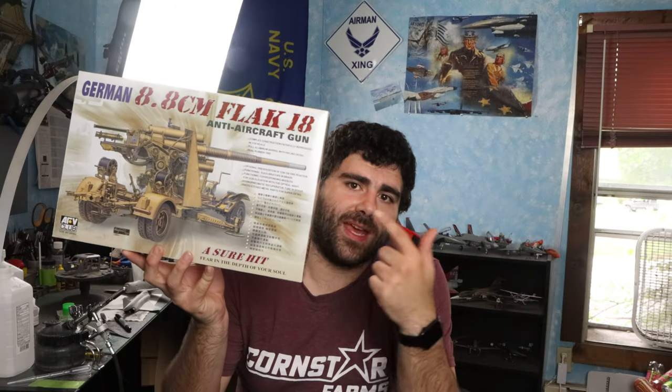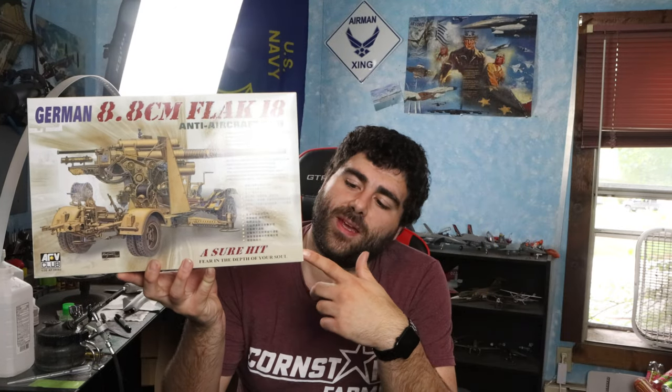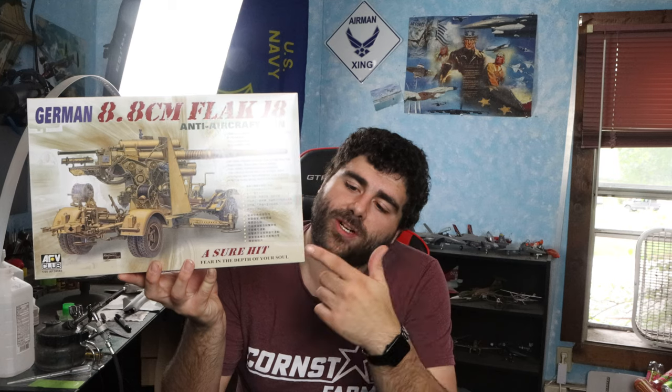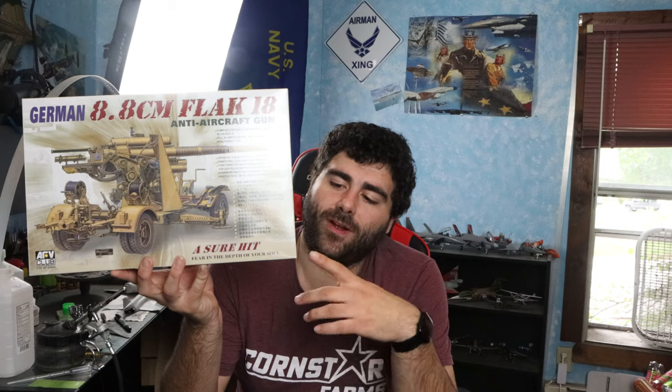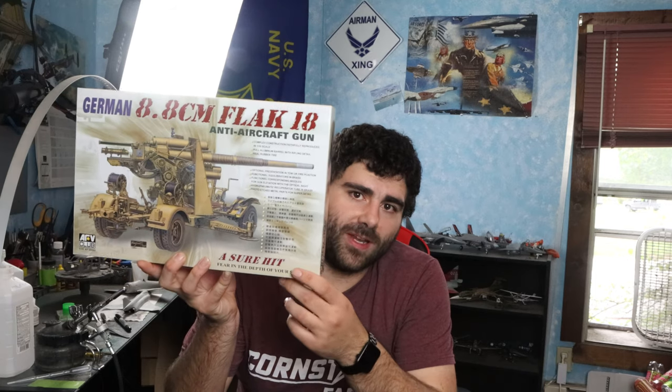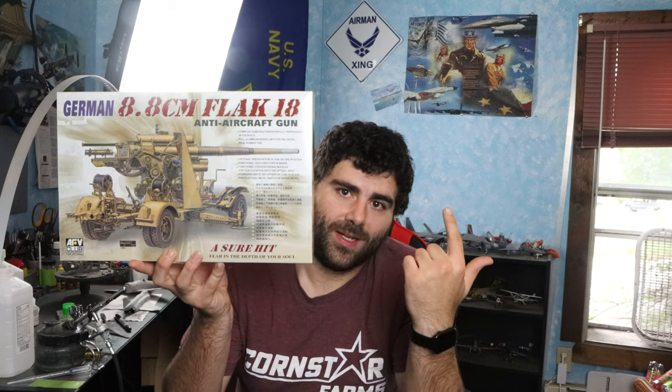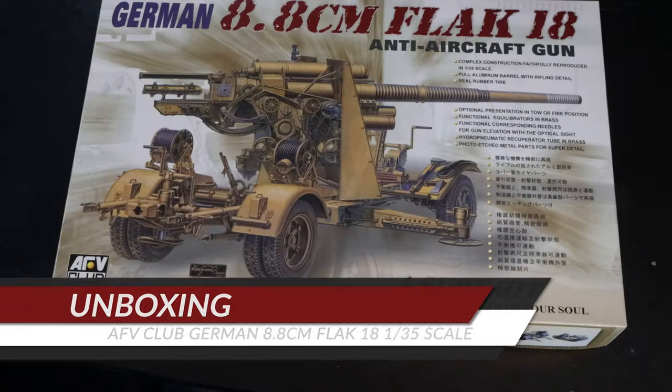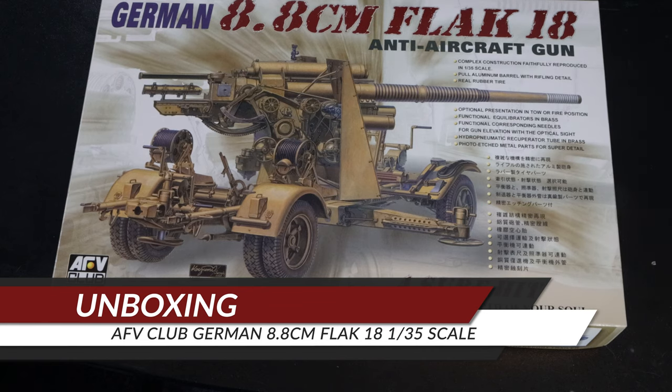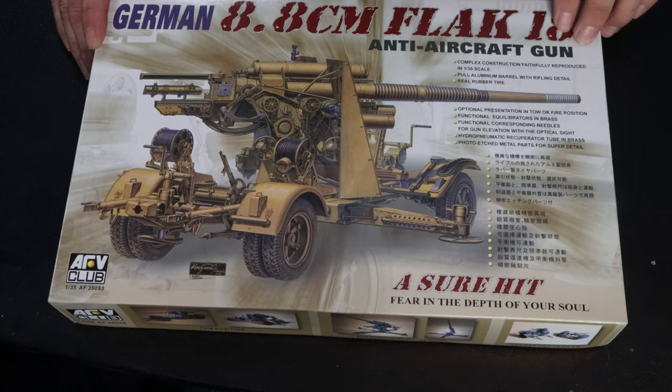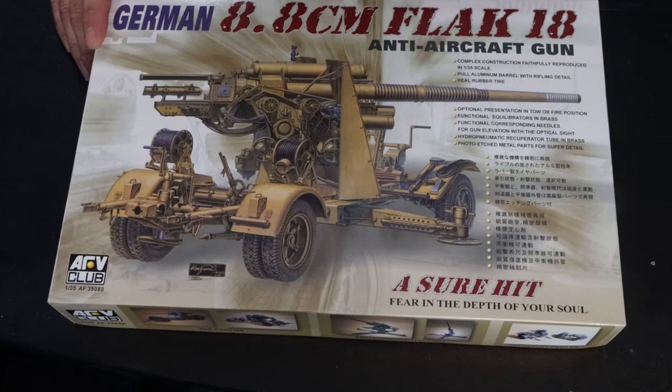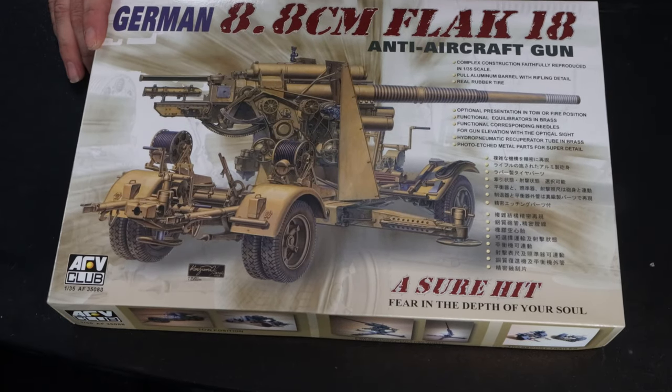Alright, today we're taking a look at this 1:35th scale German 8.8 centimeter Flak 18 anti-aircraft gun from AFV Club. I've never done one from them. The Flak 88s are always pretty cool, so let's dig into the box. Alright, so like I said before, it's the German 8.8 centimeter Flak 18 anti-aircraft gun from AFV Club. It is kit number AF35083.